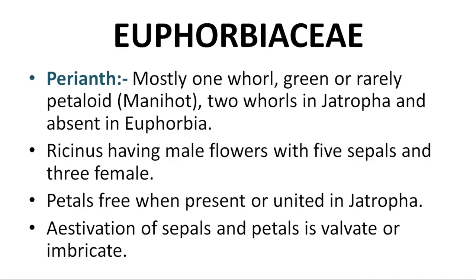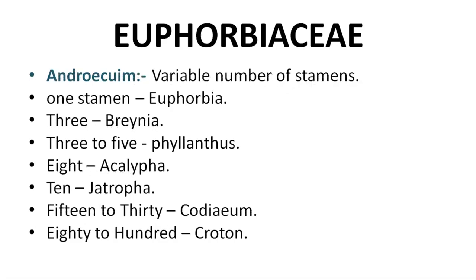Androecium is variable in number — different genera have different numbers of stamens. In Euphorbia there is only 1 stamen; Bryonia has 3; Phyllanthus has 3 to 5; Acalypha has 8; Jatropha has 10; Codiaeum has 15 to 30; Croton has 80 to 100 stamens.